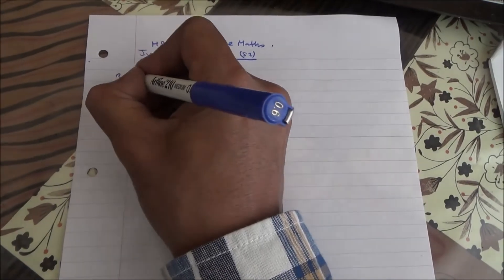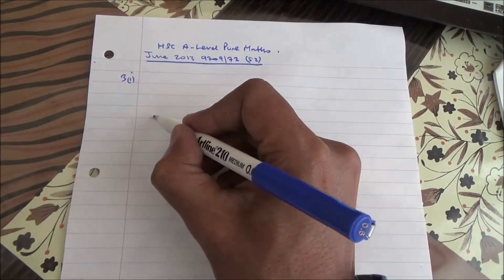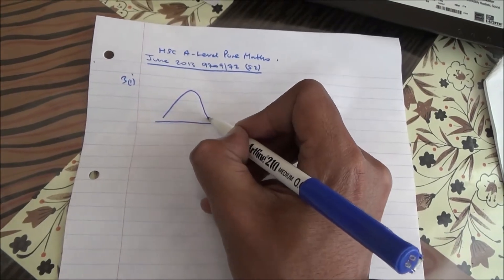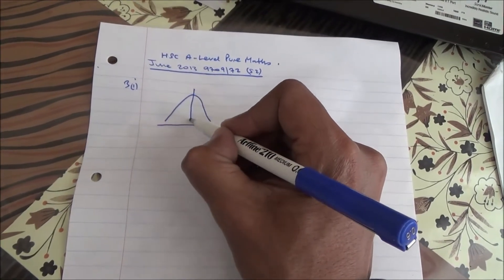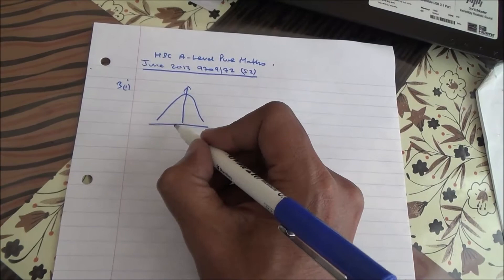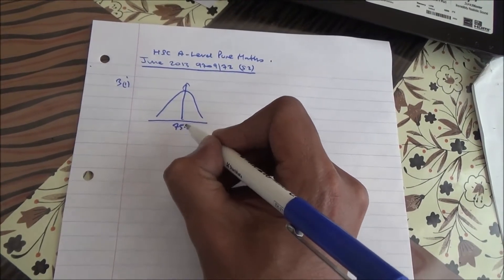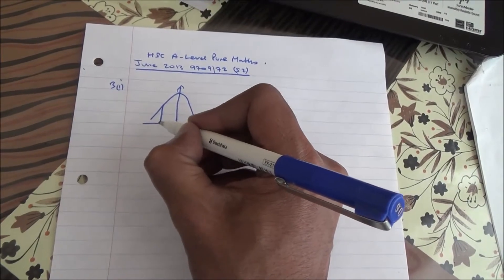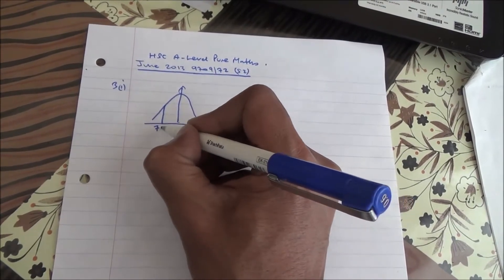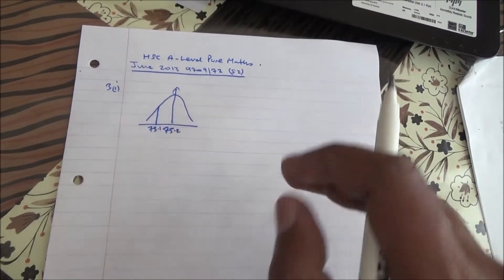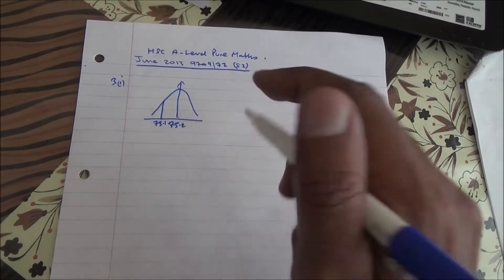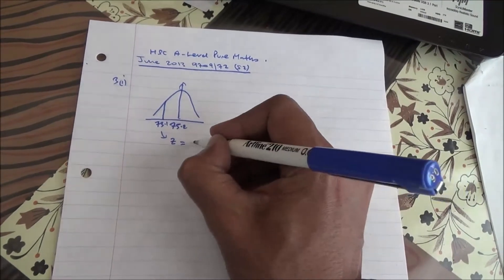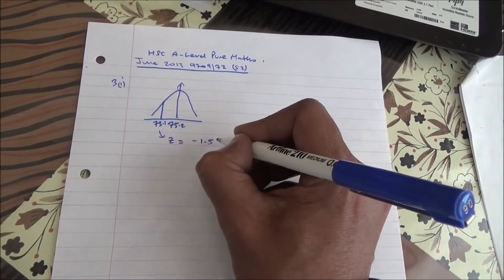Okay, for this question number 3, for the first part, we can draw a normal distribution curve, just a sketch of it. And here's the mean, which is 75.2 as given in the question. Also, the test was carried out and it was found that the observed mean was 73.1, giving a Z statistic value of negative 1.563.